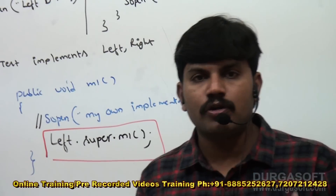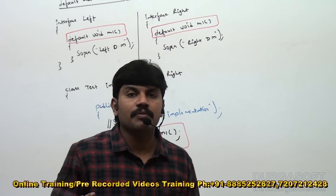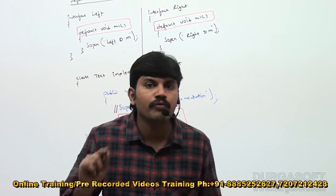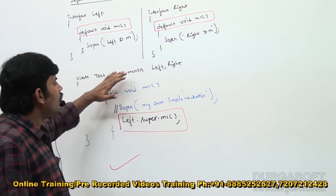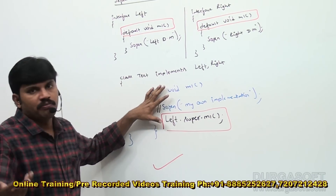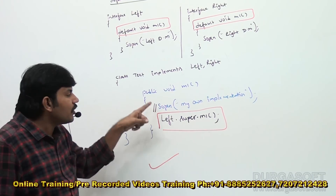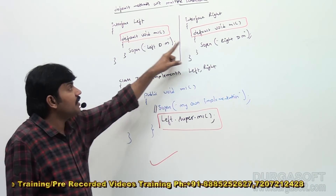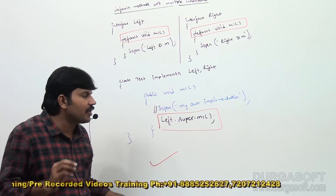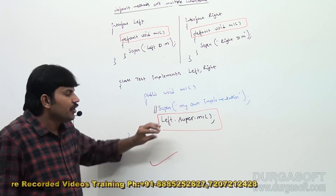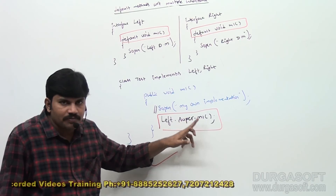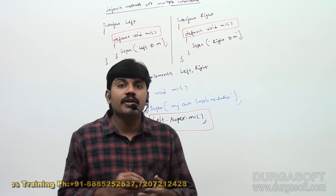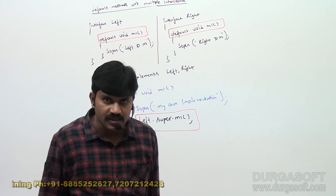So what if default methods cause an ambiguity problem in the case of multiple inheritance? Simply override that method in the implementation class based on your requirement. While overriding, you can provide a complete new implementation, or you can call a parent interface's method. To call a parent interface method, use `InterfaceName.super.methodName()`. This is the small twist in default methods when multiple inheritance is involved.